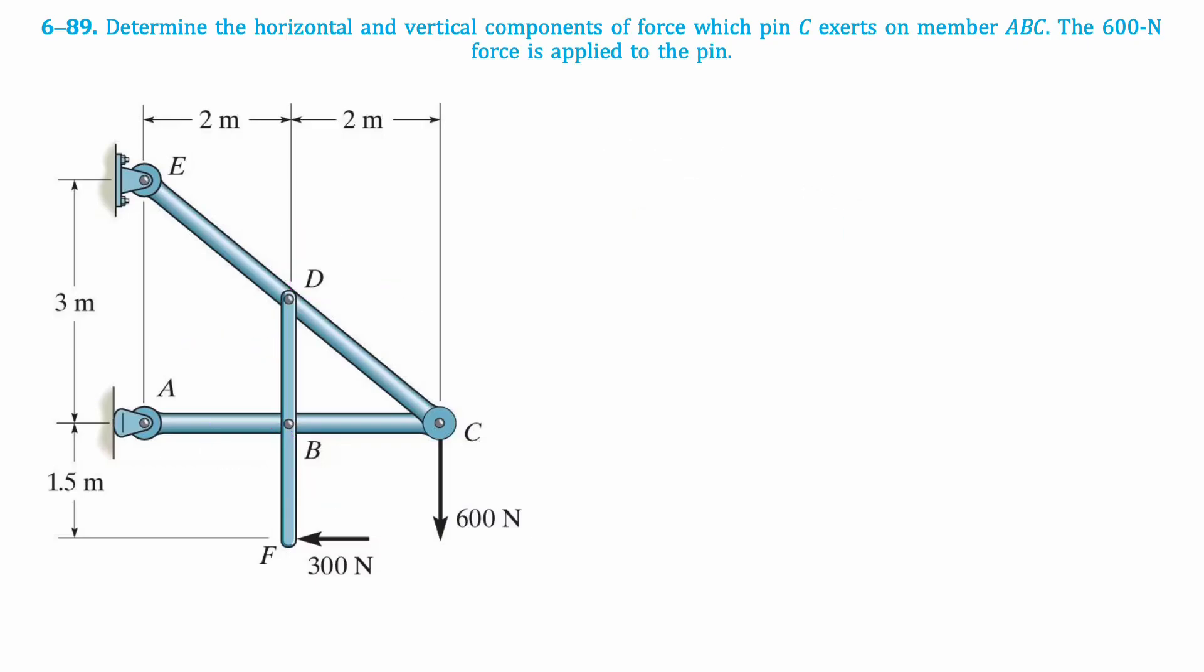Next, we'll draw the free body diagram for member AC. We'll have the same horizontal reaction at point A, then we can draw the reaction forces at point B. Remember to reverse the directions of the reaction forces at point B as compared to the way they were set up in the previous diagram, since we are now looking at a different member.